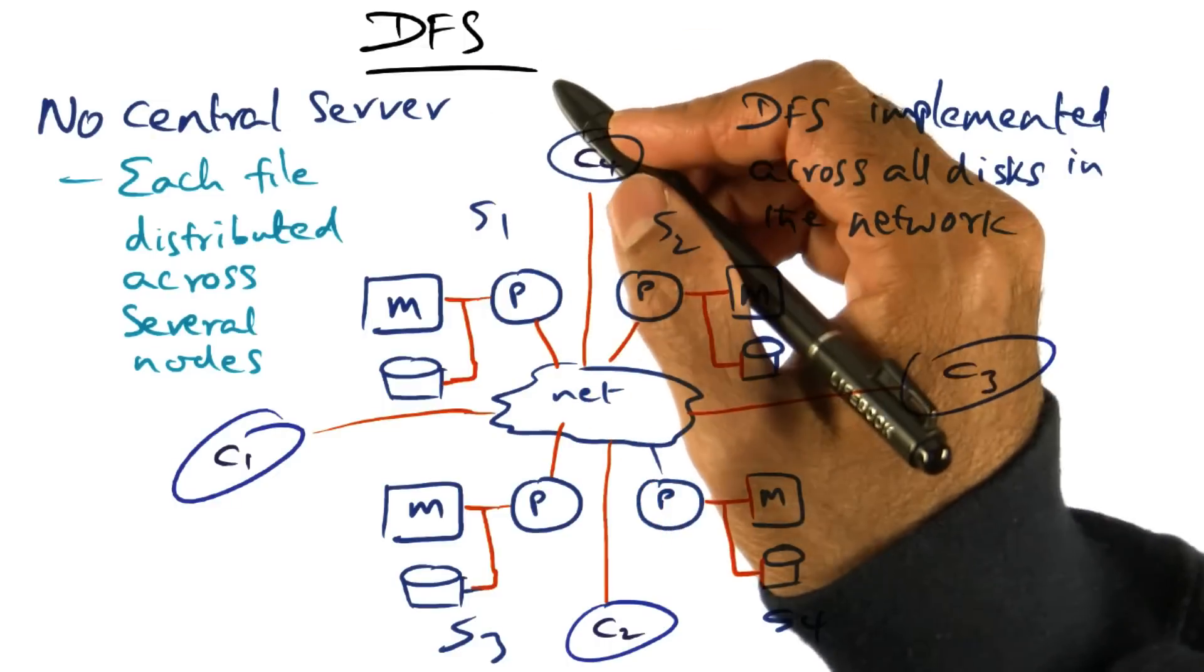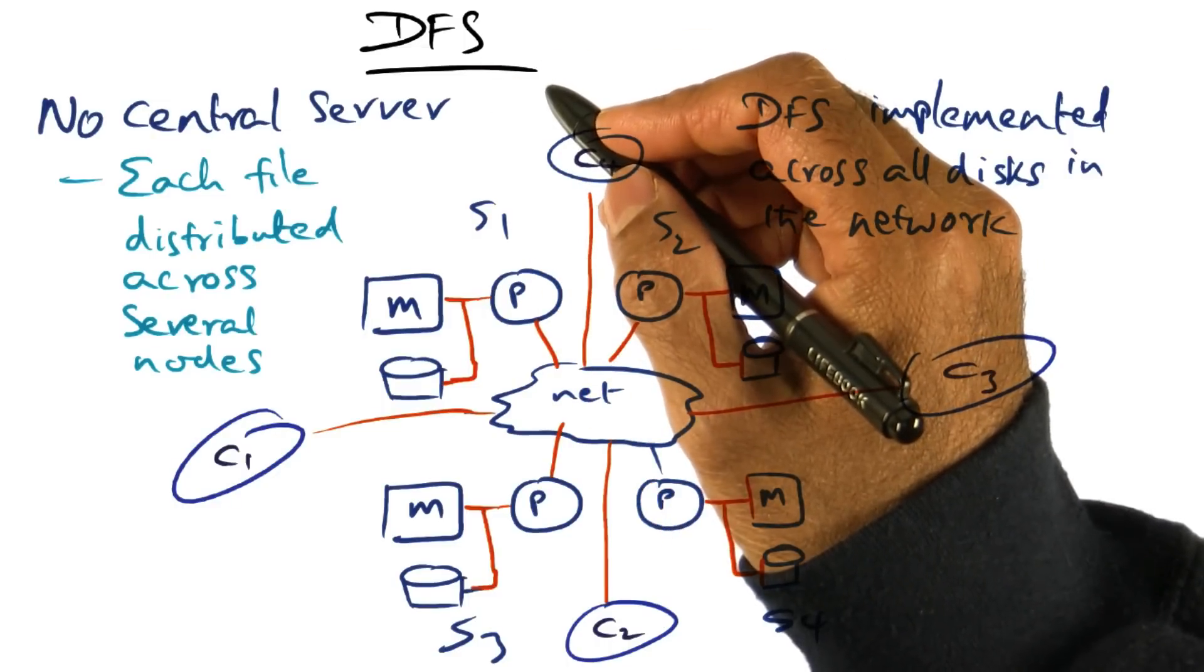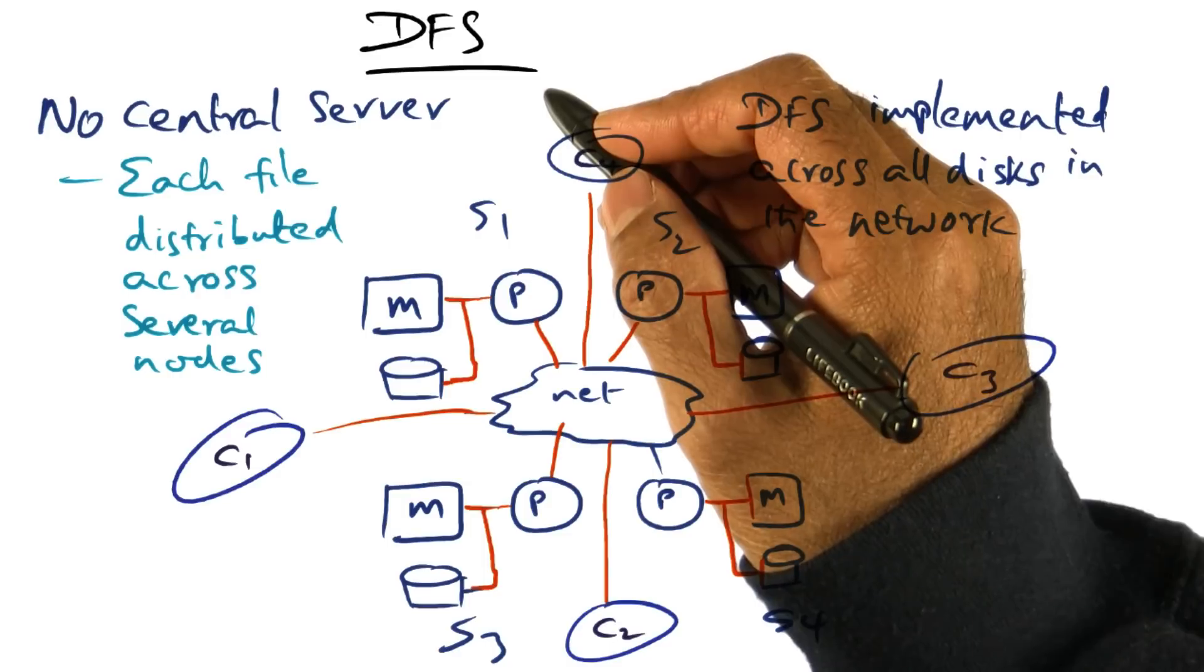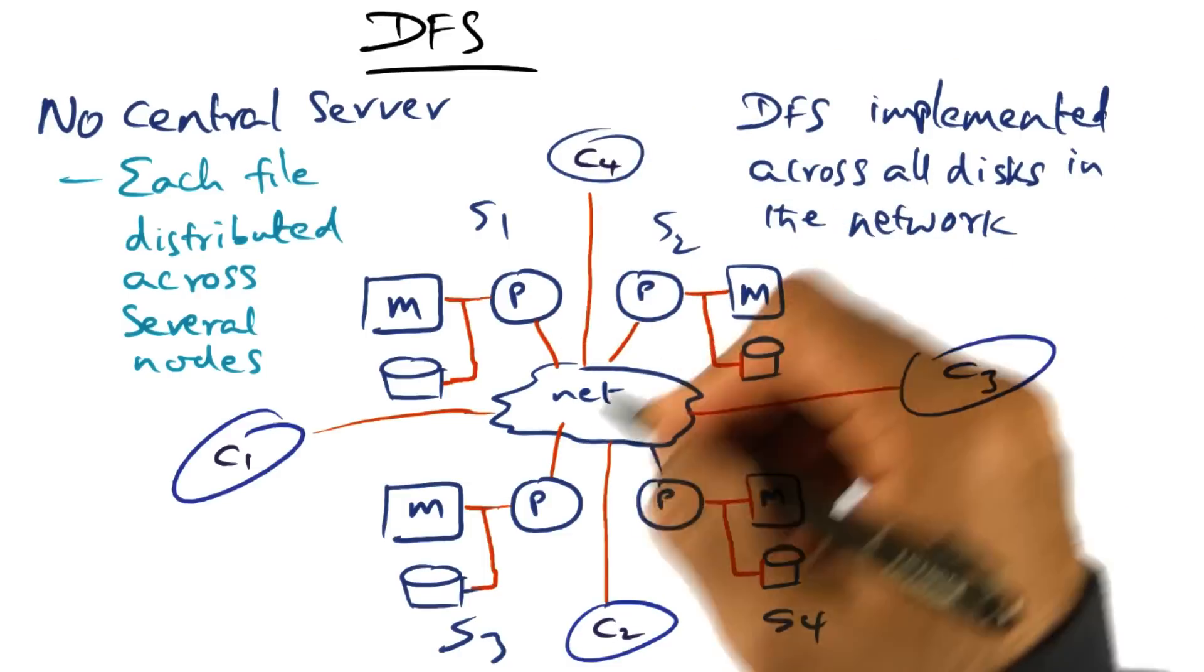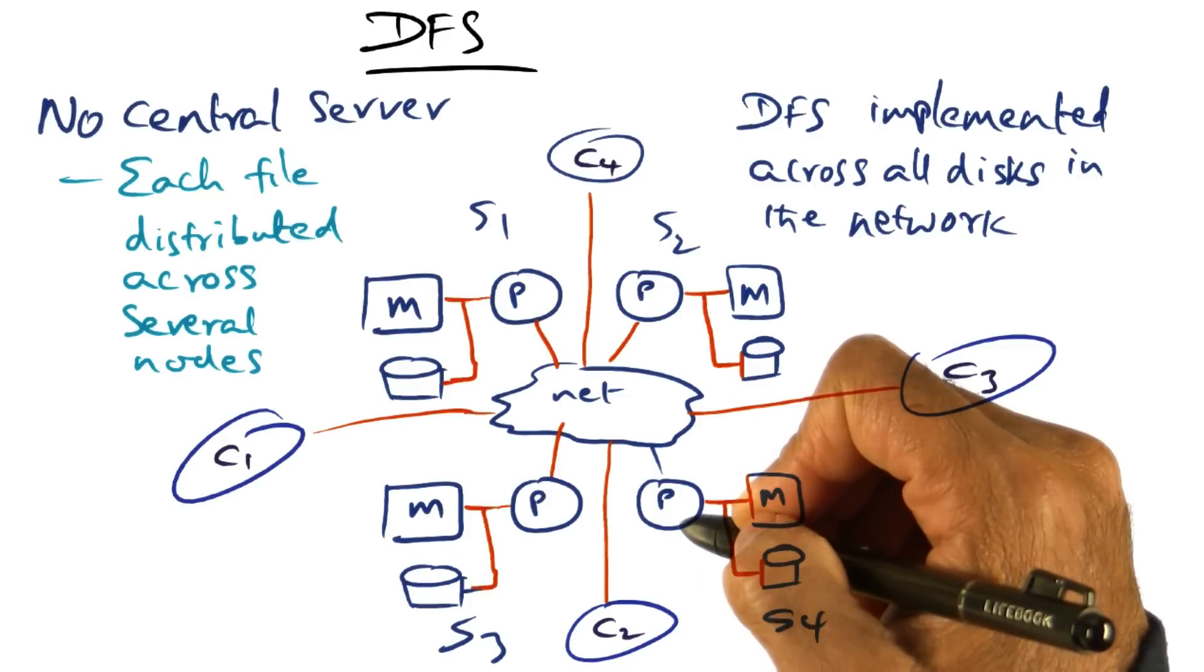The vision with a distributed file server is that there is no central server anymore. Each file is distributed across several servers. What does it mean?